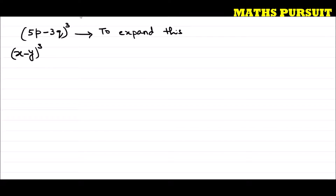The identity is: (x minus y) to the power 3 is equal to x to the power 3 minus y to the power 3 minus 3xy into (x minus y).